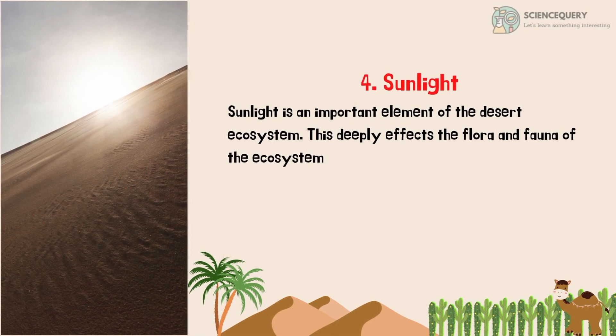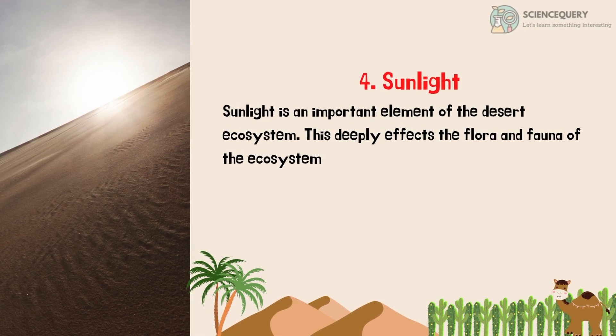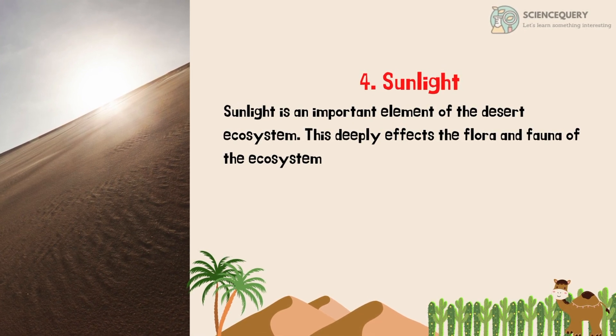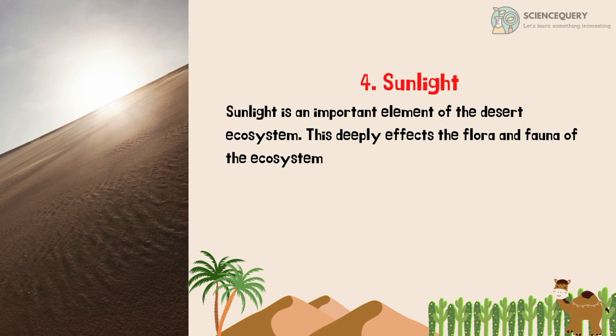The fourth abiotic factor is sunlight. Sunlight is an important element of the desert ecosystem. This deeply affects the flora and fauna of the ecosystem.